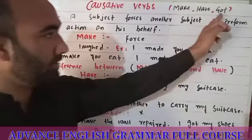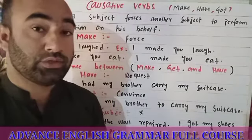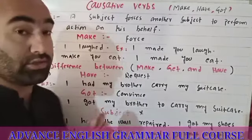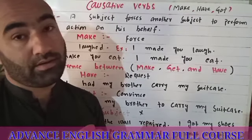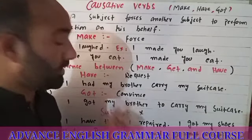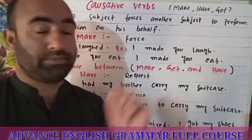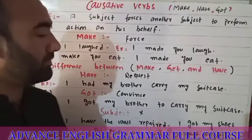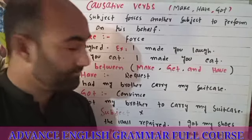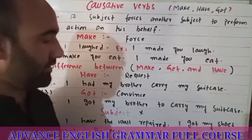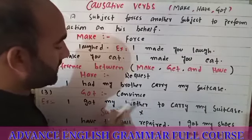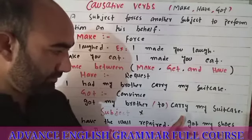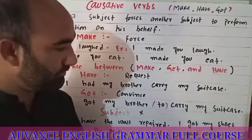Now we will talk about 'get.' The word 'get' is used when one person convinces another person to do something. The causative verb 'get' is used when we convince someone. For example: 'I got my brother to carry my suitcase.' Note that 'to' is used with 'get' before the action verb.